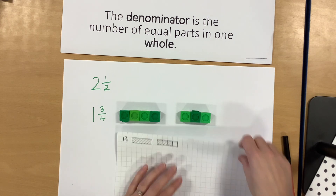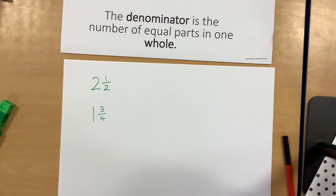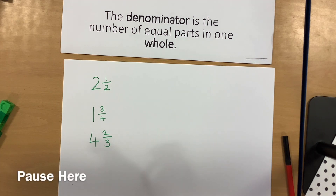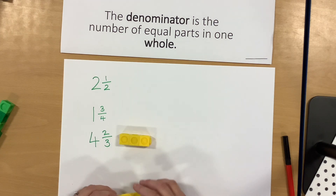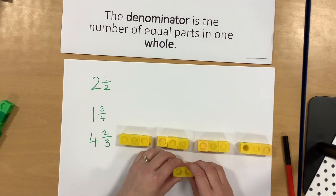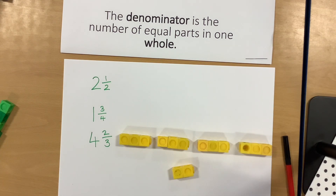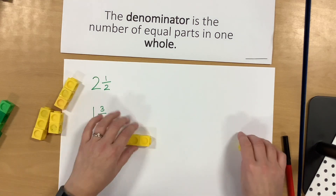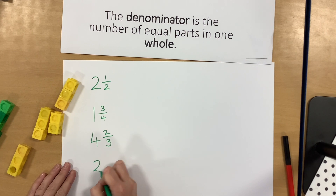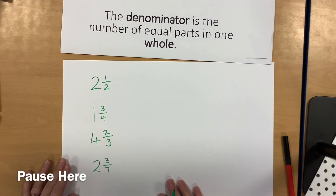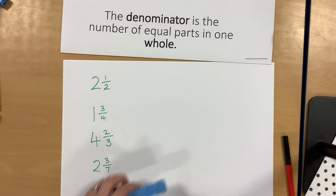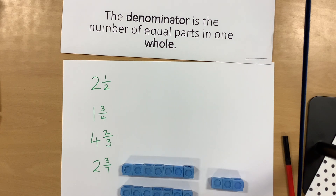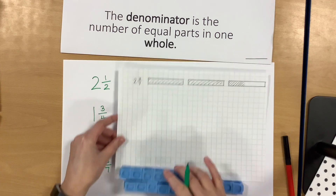The next one I'd like you to have a go at is four and two thirds — either build or draw it, pause the video and then come back to check. Four and two thirds might look like this: four whole ones and then two thirds. Or if you were going to draw it, it could look like this. To finish off, I'd like you to do two and three sevenths — pause the video and then come back to check your answer. Two and three sevenths might look like this: one, two, and then three out of seven. Or if you were going to draw two and three sevenths, it could look like this.